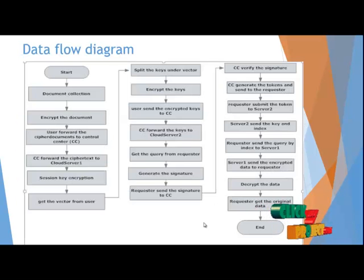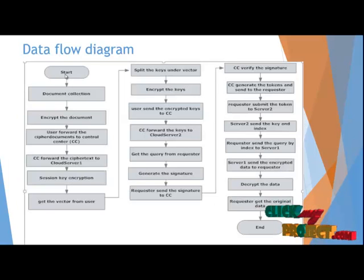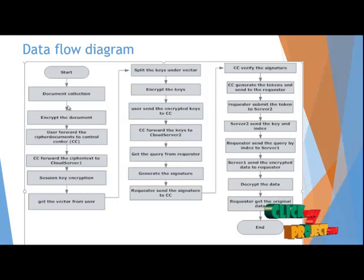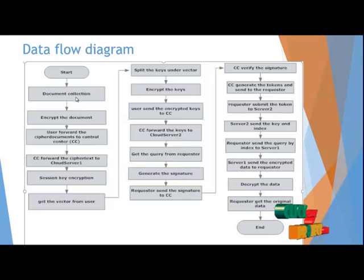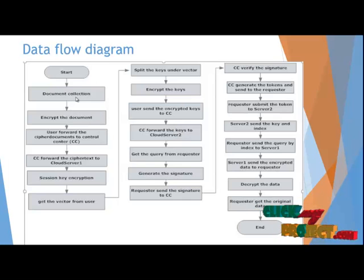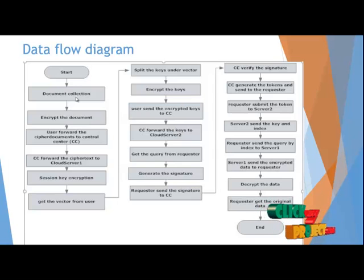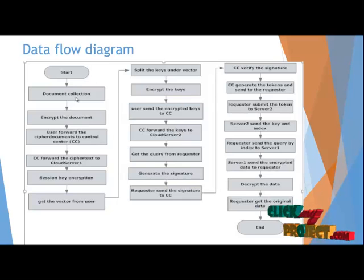Next, I am going to explain the data flow diagram of the process. Start the process. The user collects a number of test documents and encrypts the documents using AES Algorithm — Advanced Encryption Standard — which is a Symmetric Key Encryption Algorithm. Next, the user forwards the cipher text nodes to the Control Center. Then, the Control Center forwards the cipher tags to Cloud Server 1.